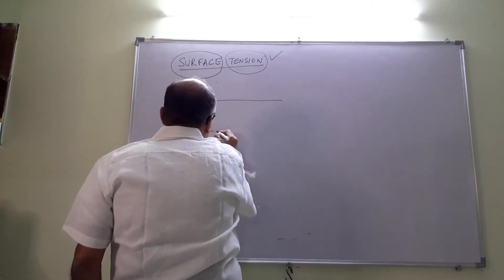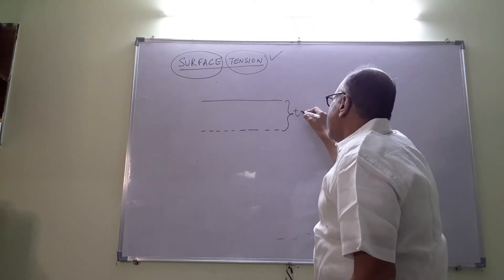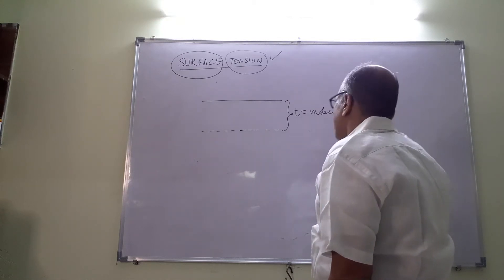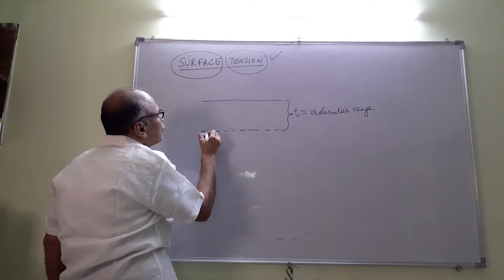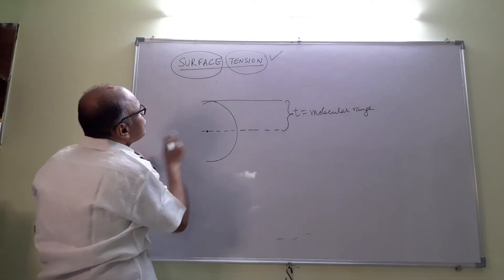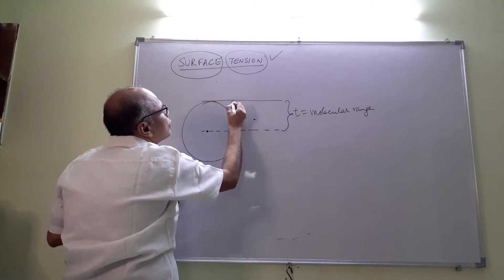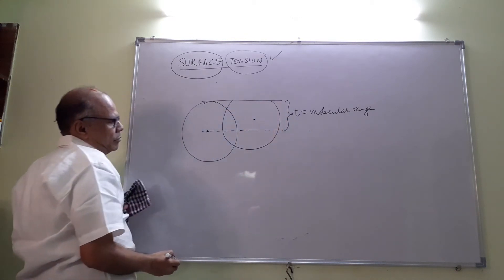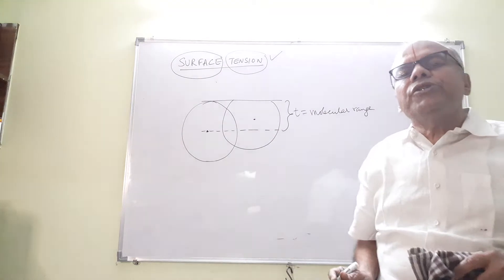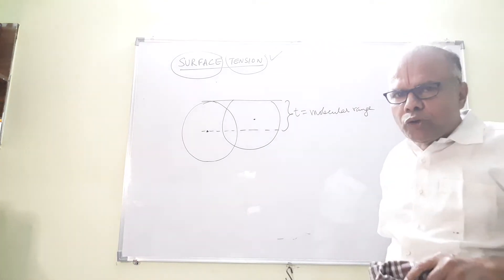If I take a thickness equal to the molecular range and consider a molecule near the top of that layer, the sphere of influence will extend above the surface where there are no liquid molecules. So when we say surface, it is not just the top layer of molecules, but 10 to 15 layers of molecules constitute the surface.